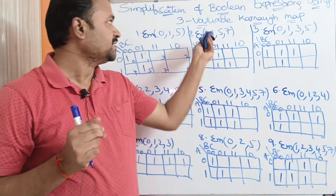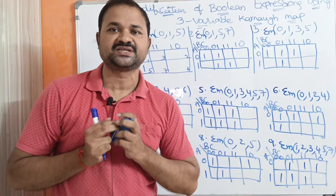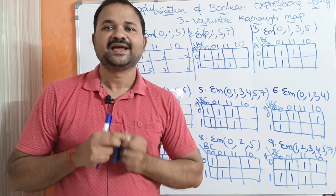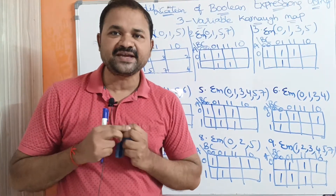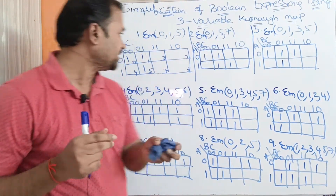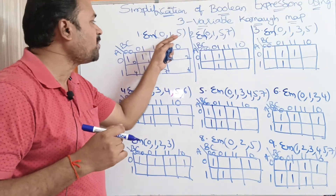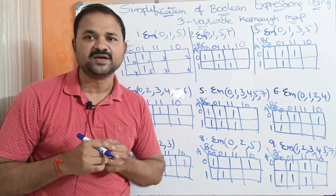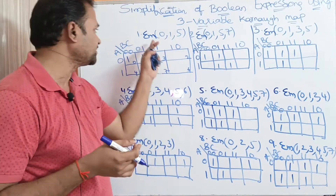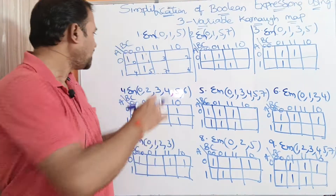Let us discuss simplification of Boolean expressions using the 3-variable Karnaugh map. Let us simplify 10 Boolean expressions using the Karnaugh map. Sigma specifies sum of products operation, and M specifies minterm.